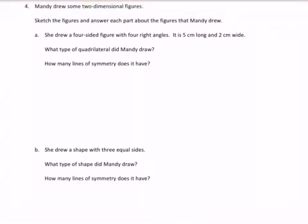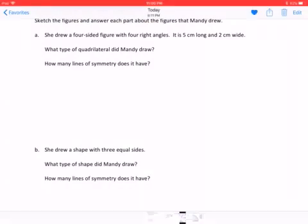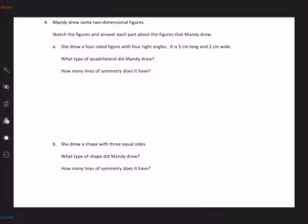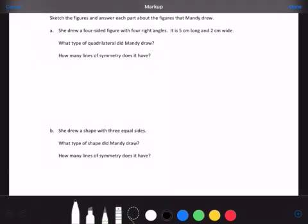So this one says Mandy drew some two-dimensional figures. Sketch the figures and answer each part about the figures that Mandy drew. Sketch means that it doesn't have to be perfect, that it can be just a drawing without using your protractor or rulers. So A, she drew a four-sided figure with four right angles. It is five centimeters long and two centimeters wide. So let's draw that first.